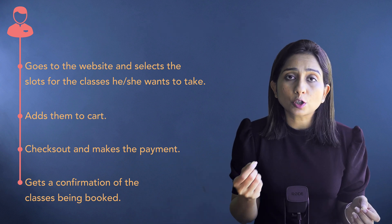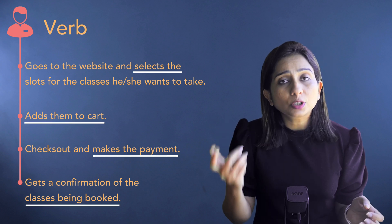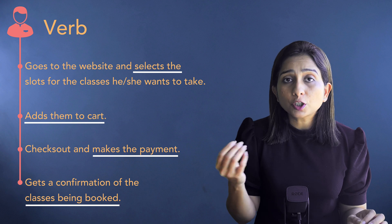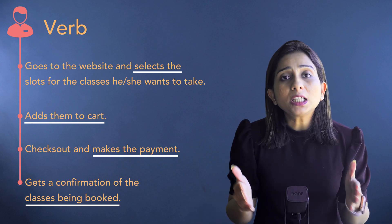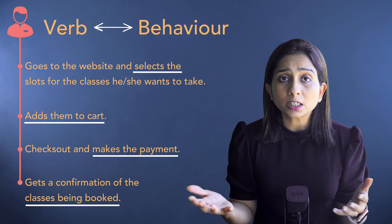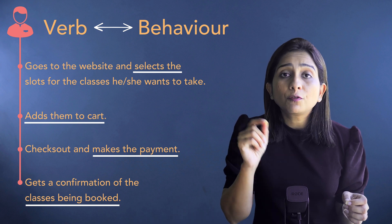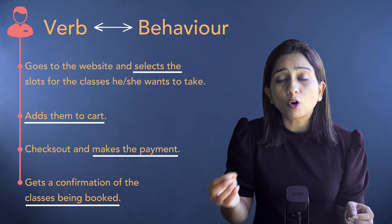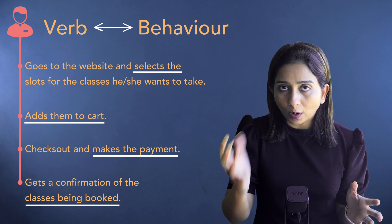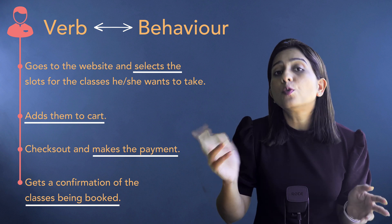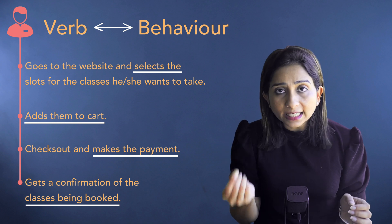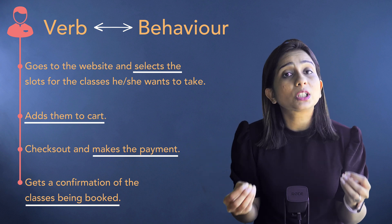Now let's focus on the verbs. Booking a lesson, adding to the cart, making a payment — these are the verbs in the use case. These verbs make up the behaviors of those classes, or the actual requirements those classes are going to fulfill. They also give a hint about whether a task involves one class or multiple classes, and how different classes interact with each other — what their relationship could be, whether a class consists of another class, or whether a class is a type of another class.